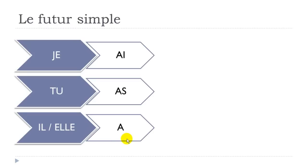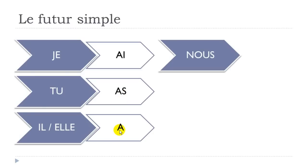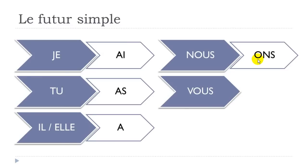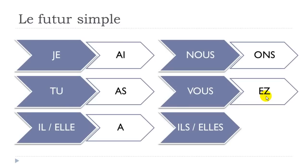Example with 'écrire' (to write), third group: remove the final E, giving 'écrir,' then add endings: 'j'écrirai,' 'tu écriras,' 'il écrira,' 'elle écrira,' 'nous écrirons,' 'vous écrirez,' 'ils écriront,' 'elles écriront.' Exceptions in le futur simple: the verb changes but the endings remain the same. 'Être' → 'ser' (je serai); 'avoir' → 'aur' (tu auras); 'aller' → 'ir' (il ira, elle ira); 'faire' → 'fer' (nous ferons); 'savoir' → 'saur' (vous saurez); 'voir' → 'ver' (ils verront).